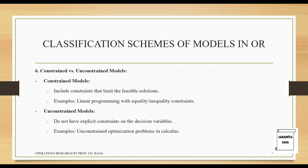Constrained versus unconstrained models: constrained models include constraints that limit the feasible solutions, such as linear programming with equality or inequality constraints. Unconstrained models do not have explicit constraints on the decision variables, for example unconstrained optimization problems in calculus. Most of the problems we are going to solve will be constrained models.